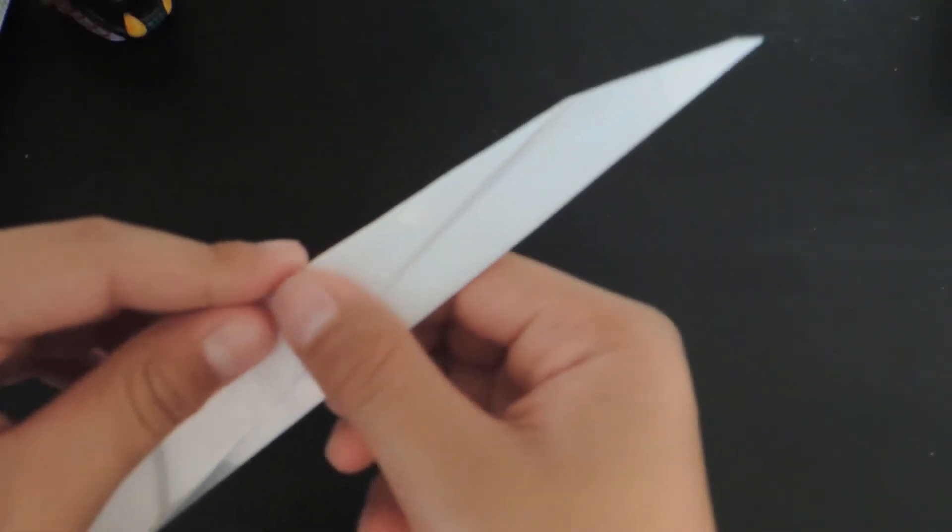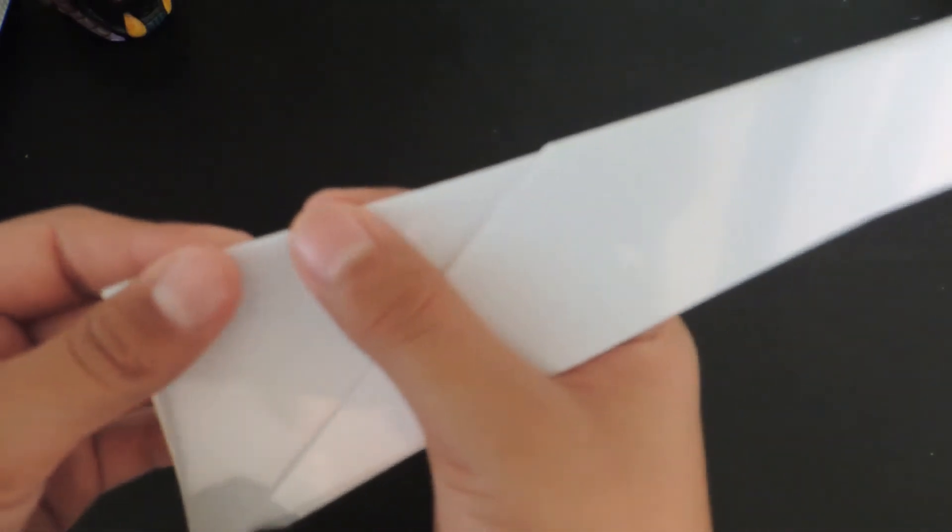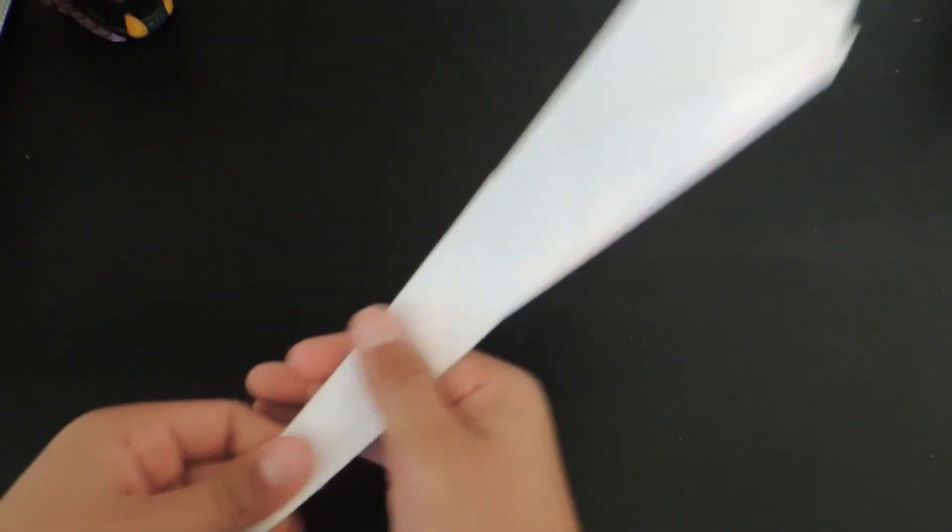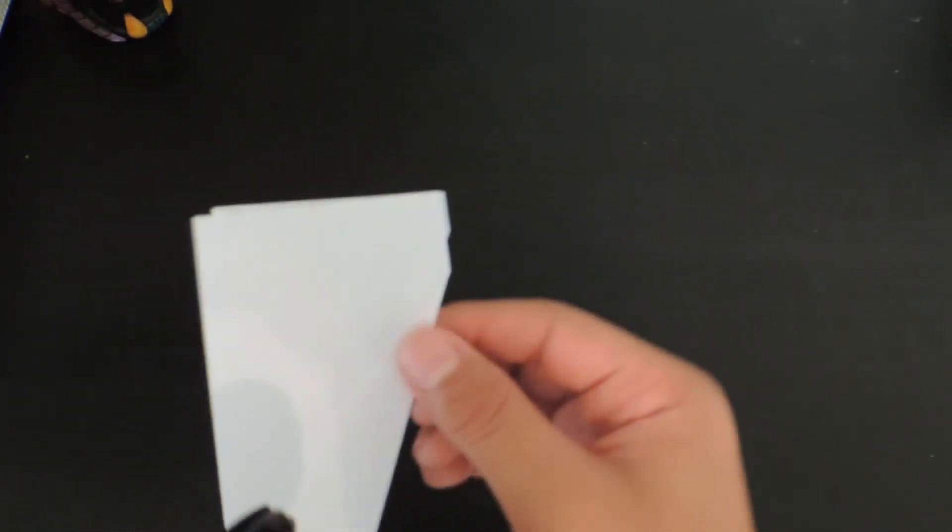Sometimes they don't come out right, but it's okay. There. You're not going to get it that good on the back, but I got it pretty good. So make sure it's folded good. So this is why you need those two corners perfect.